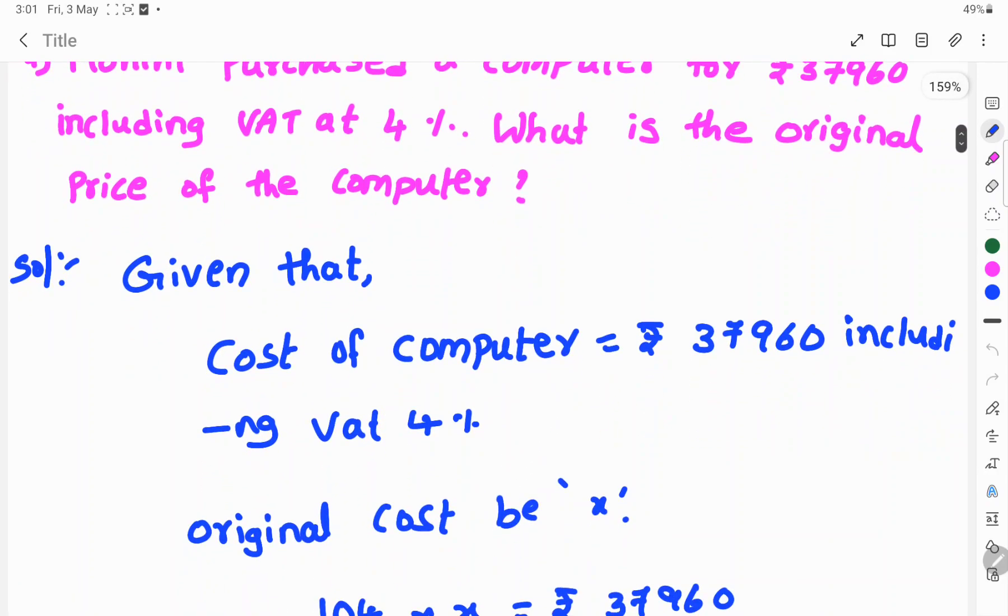total percent is 100% plus 4%, that implies 104%. Percent means 100, so 104 by 100.